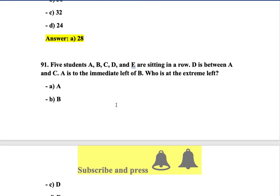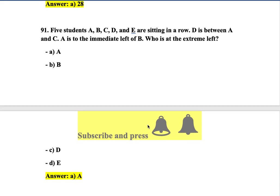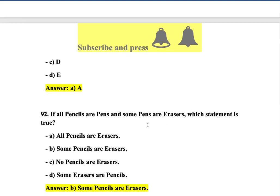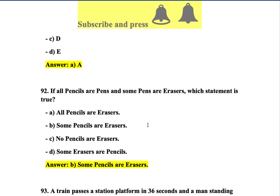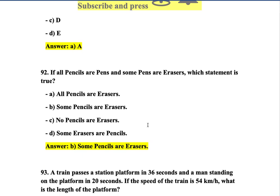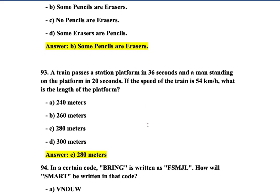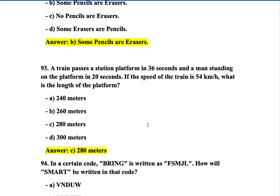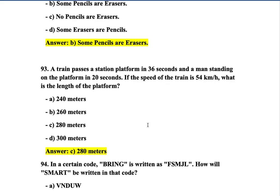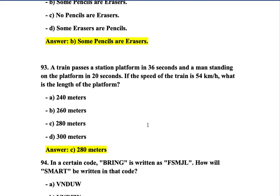Question 91: Five students A, B, C, D, and E are sitting in a row — the correct answer is option A. Question 92: If all pencils are pens and some pens are erasers, which statement is true? Option B is true. Question 93: A train passes a station platform in 36 seconds and a man standing on the platform in 20 seconds; the speed of the train is 54 km/h — what is the length of the platform? Option C is correct.